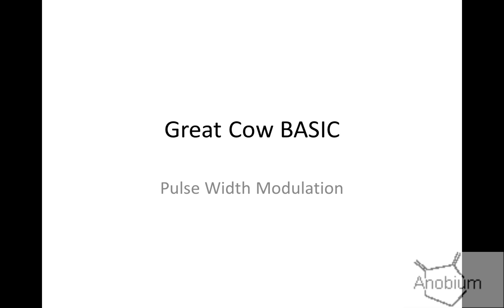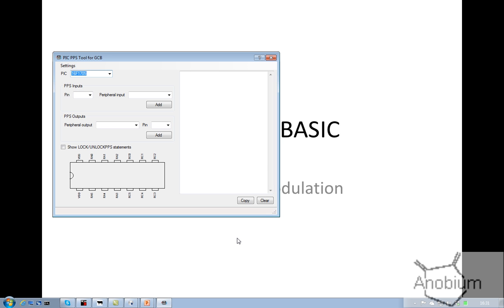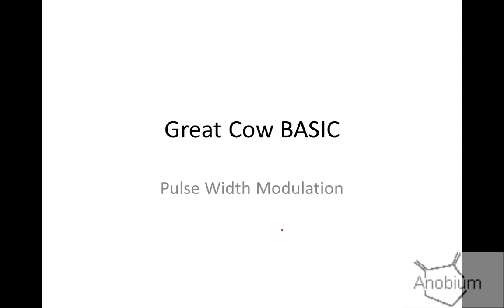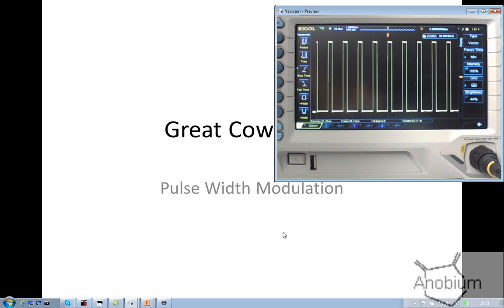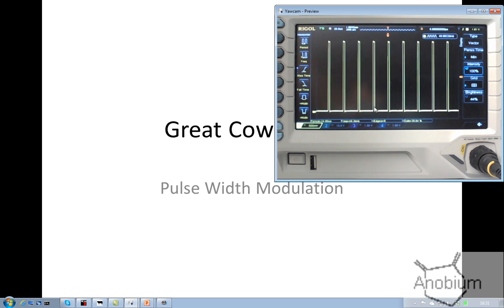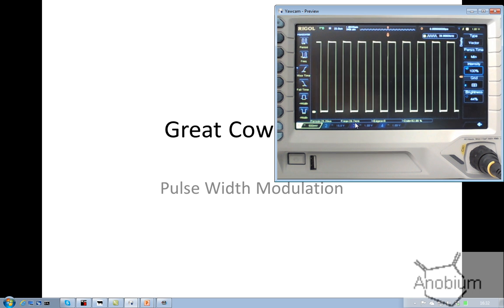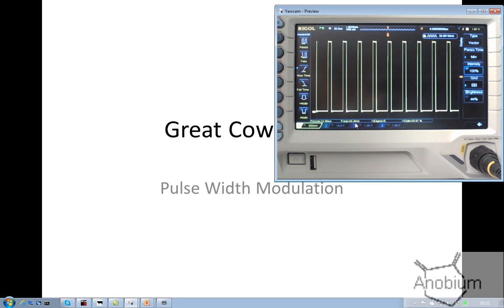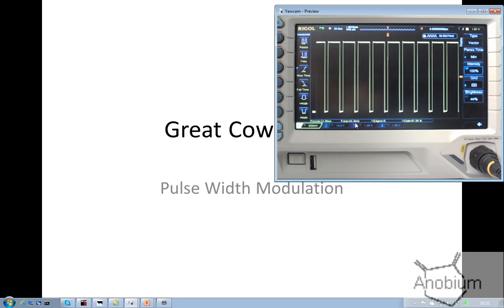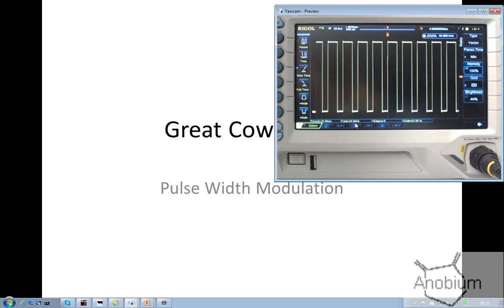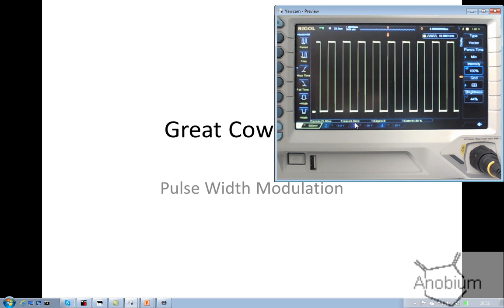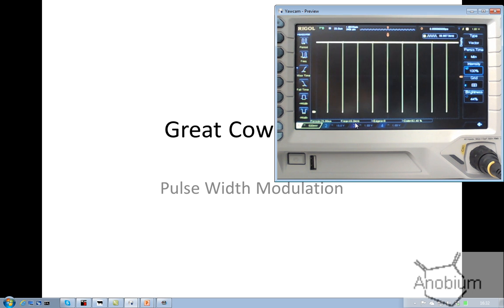Welcome to another Great Cow Basic demonstration. This is a quick demonstration of pulse width modulation. Pulse width modulation is a frequency pulse with a width called the duty. This particular one happens to be 40 kHz with a variable 10-bit duty cycle. As you increase the duty value, it increases the duty cycle, and you see the column width increase from 0 to 1023. That's called the duty cycle.